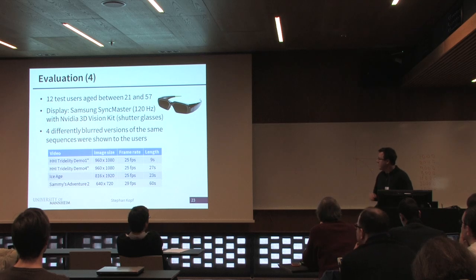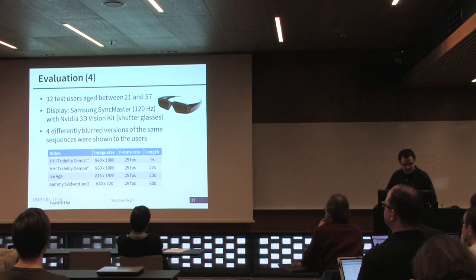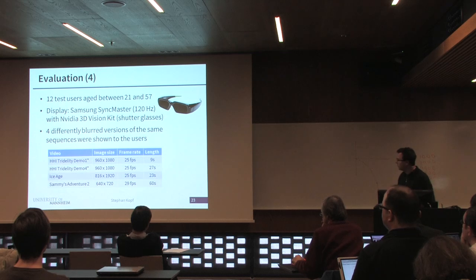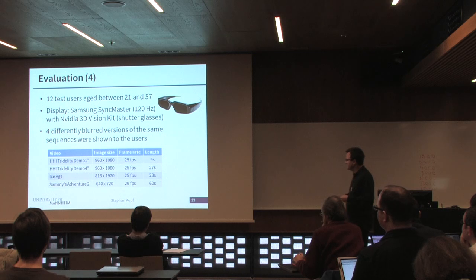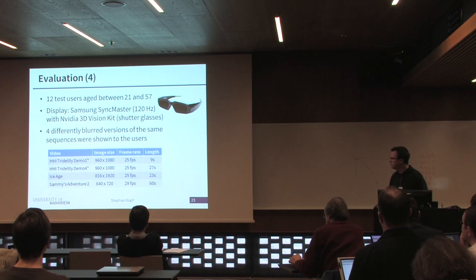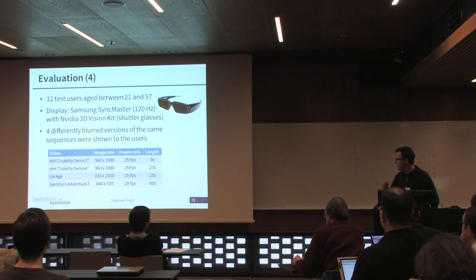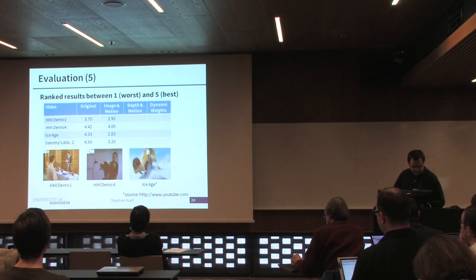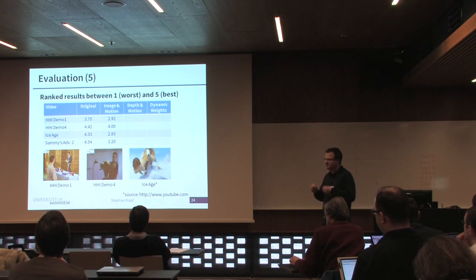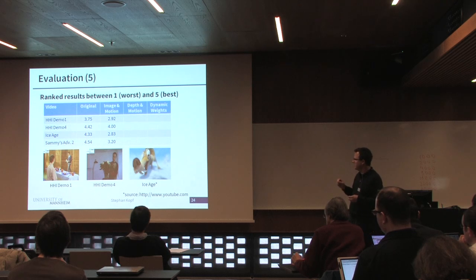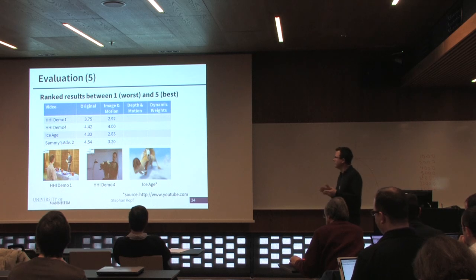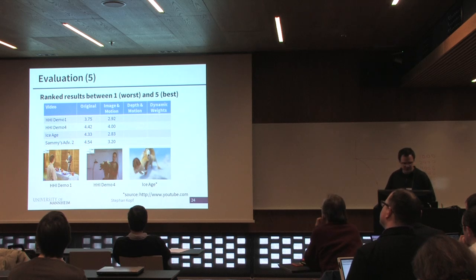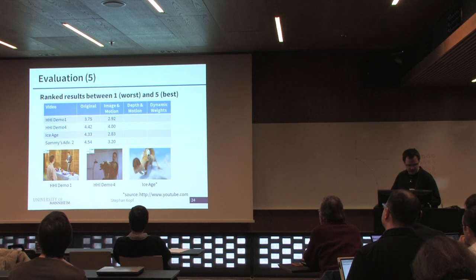The users were using shutter glass technology and watched four differently blurred versions of the videos. We had four videos; they could watch them again and again — each between 10 seconds and 60 seconds — so they had sufficient time, spending half an hour to one hour each. They gave feedback about the videos and could go back to compare. Even the original videos had some encoding errors included, so people noticed some errors. We had a scale from one to five, worst to best, and no video got the best marks from every user — everyone recognized some encoding errors or parts that did not appear correct.